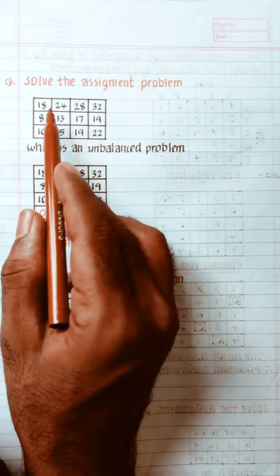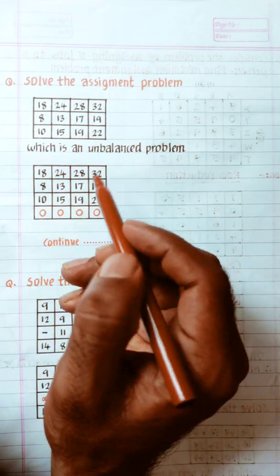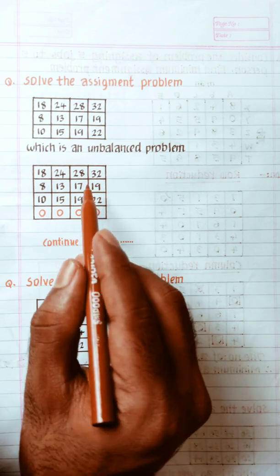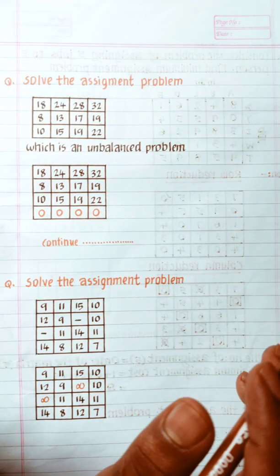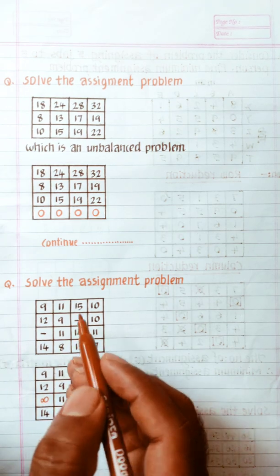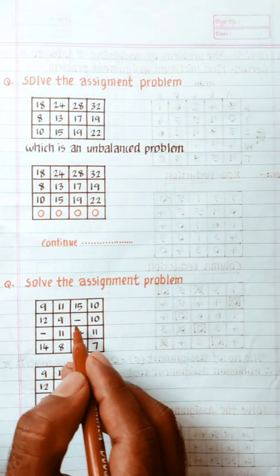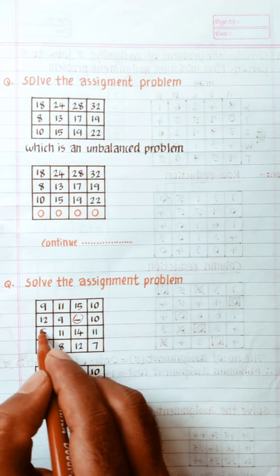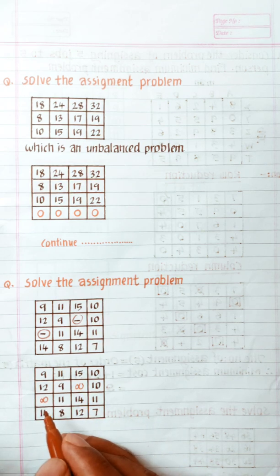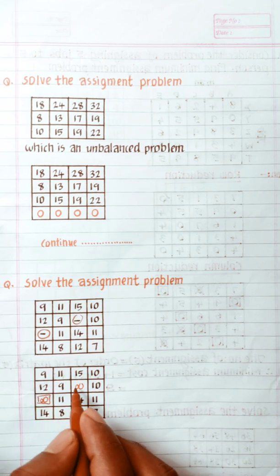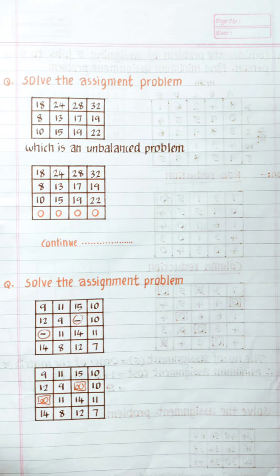This is the unbalanced problem. There are 3 rows and 4 columns. You need to understand that if you have an unbalanced problem, you need to add a dummy row to make it square. You assign infinity values to the dummy row cells. Because it is a dummy assignment, the value is infinity. Infinity plus any value is infinity, and minus infinity is still infinity.